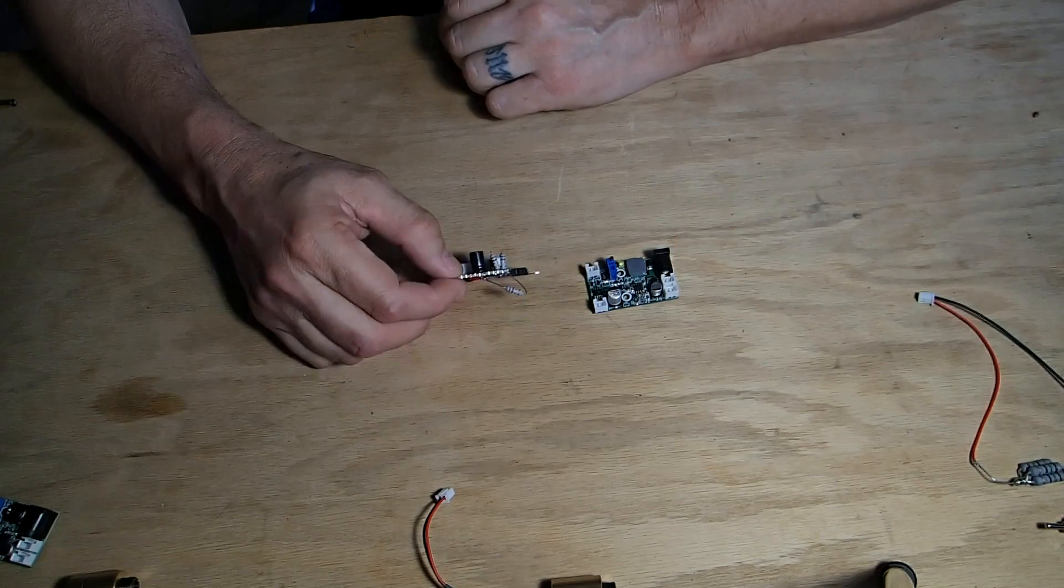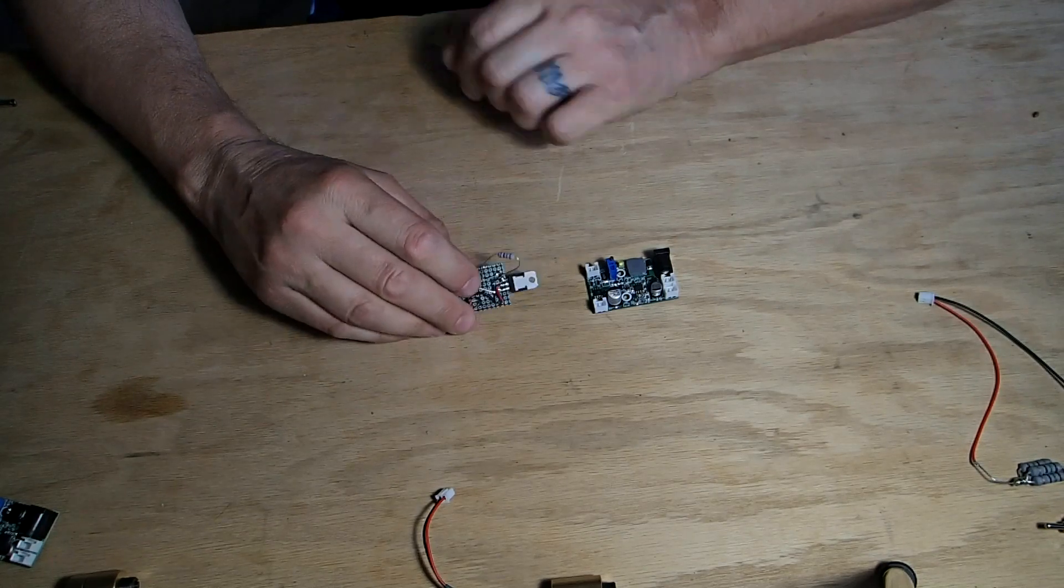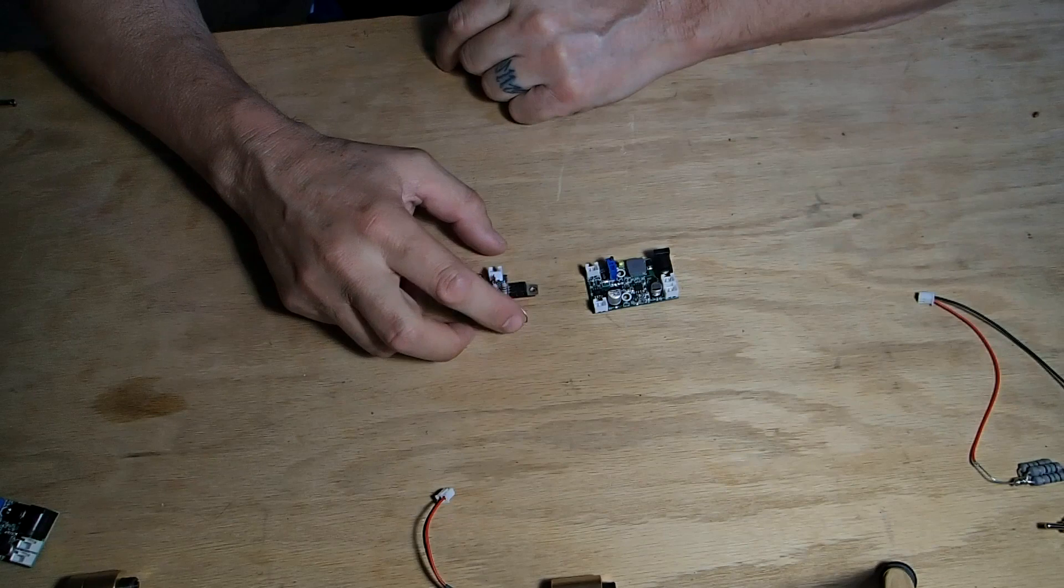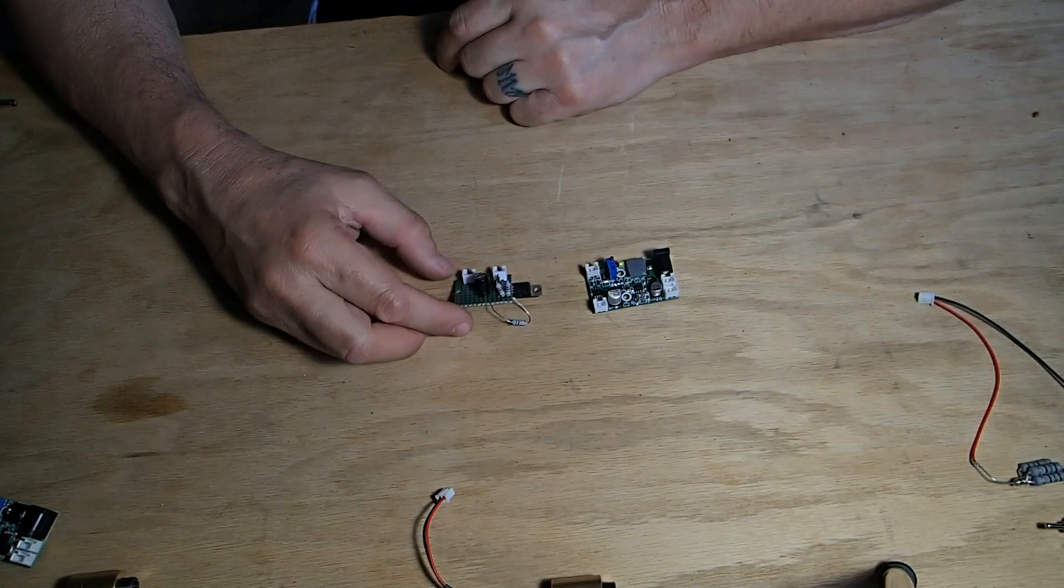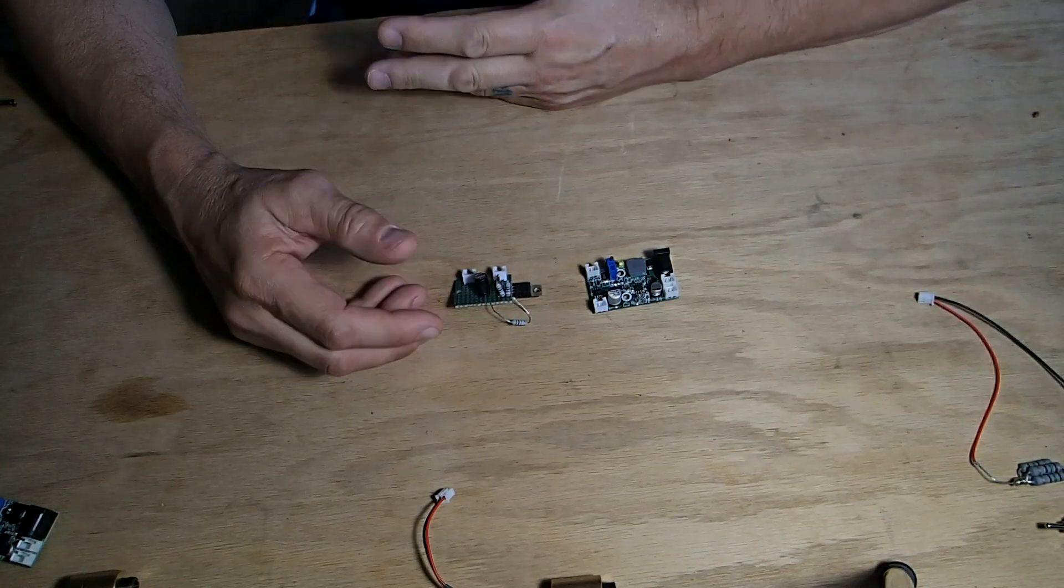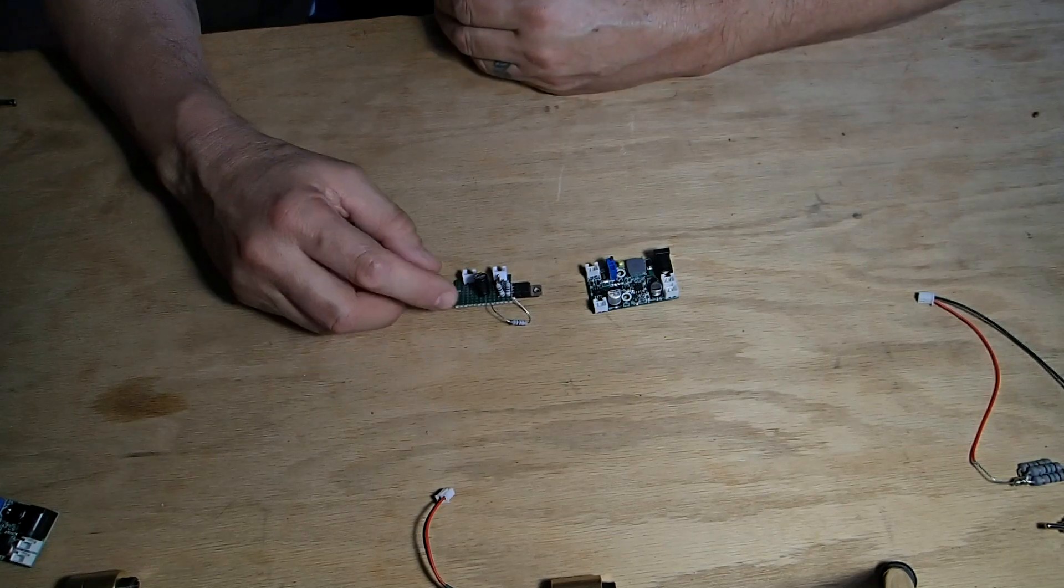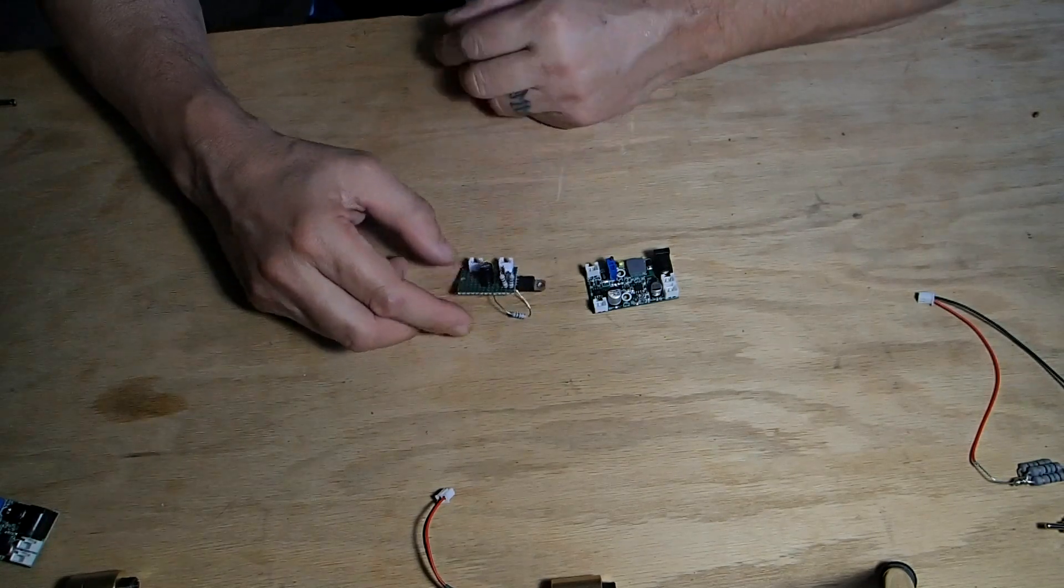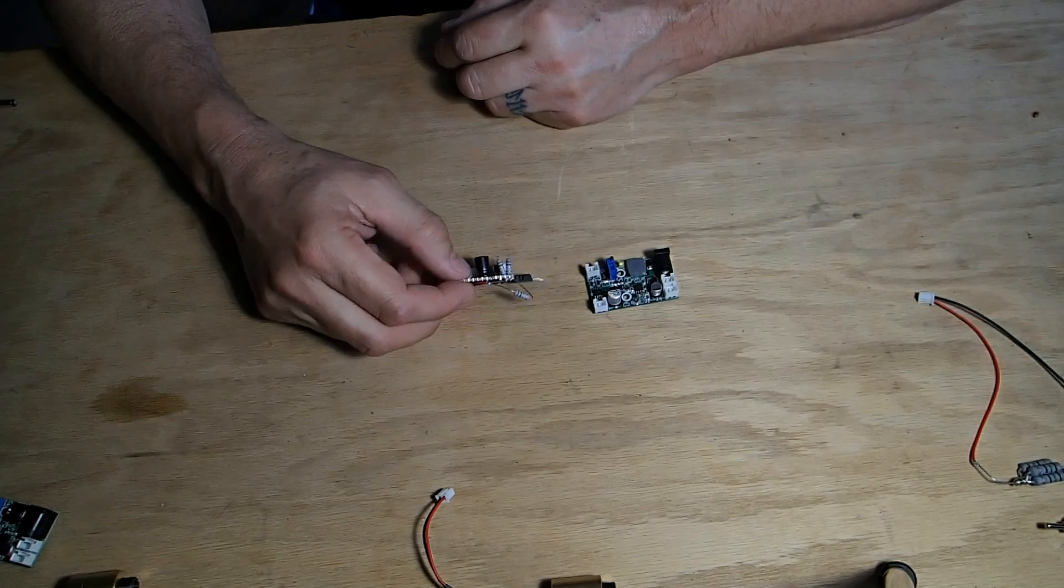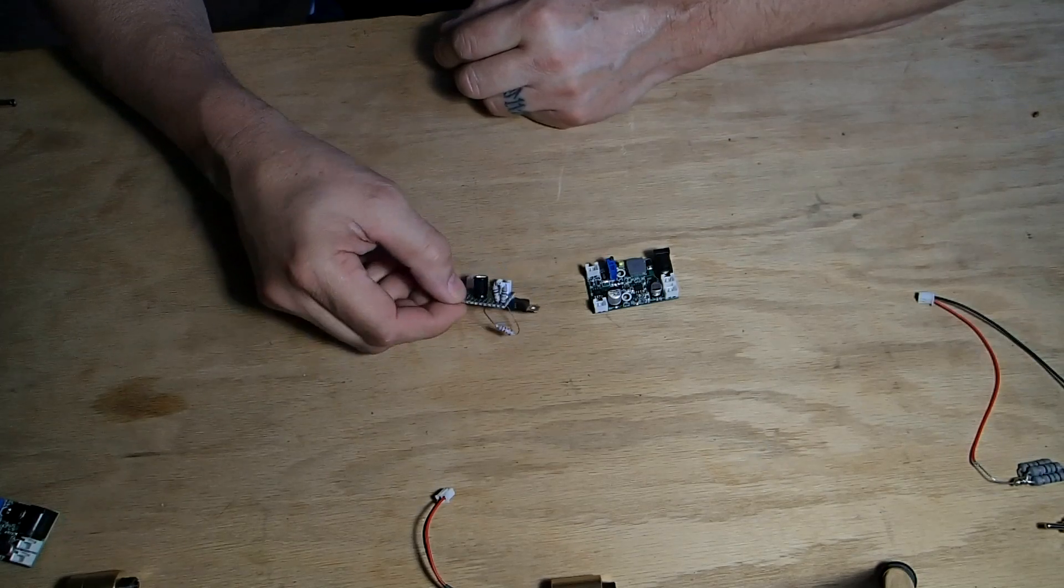The downside to this is that you can set it for one current by changing the resistor values here. If you have different laser diodes as I do with different currents, I have to keep changing the resistors out and this becomes a hassle. So for me this is becoming obsolete.